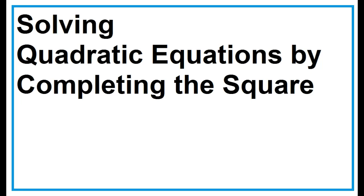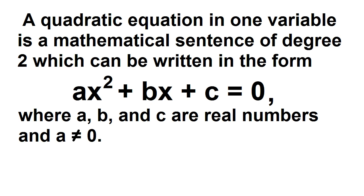Solving quadratic equations by completing the square. A quadratic equation in one variable is a mathematical sentence of degree 2, which can be written in the form ax squared plus bx plus c equals 0, where a, b, and c are real numbers and a is not equal to 0.